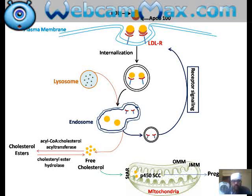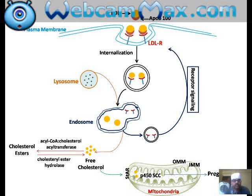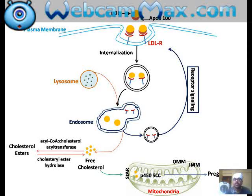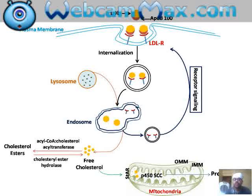So LDL containing cholesterol gets internalized into the steroidogenic cell, where it fuses with lysosomes. Free cholesterol is formed, which is taken up by the StAR protein, transferred from the outer to the inner mitochondrial wall, and inside the mitochondria the P450 side chain cleavage enzyme converts this cholesterol to pregnenolone. In the next slide we will see how this pregnenolone gets modified through two pathways of steroidogenesis.